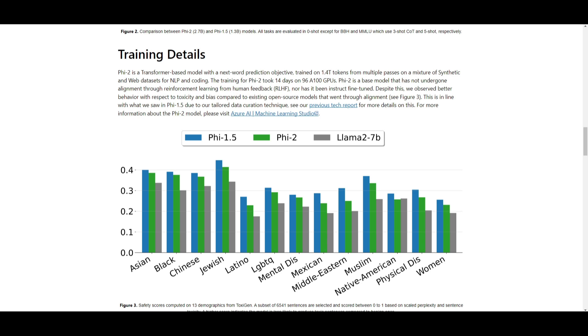How was it actually trained? This is a transformer-based model with a next word prediction objective. It underwent training on 1.4 trillion tokens, encompassing multiple passes on a mixed synthetic and web dataset for natural language processing. It also focuses on coding tasks, so you get the best of all different types of categories. The training process for Phi-2 spanned 14 days utilizing 96 A100 GPUs. This Phi-2 model is considered a base model and did not undergo any alignment through reinforcement learning from human feedback or instructive fine-tuning.